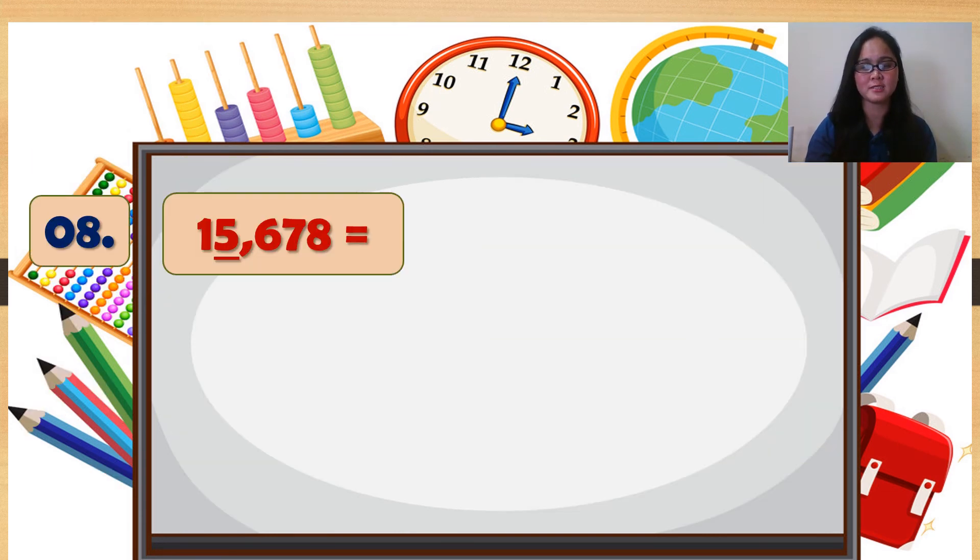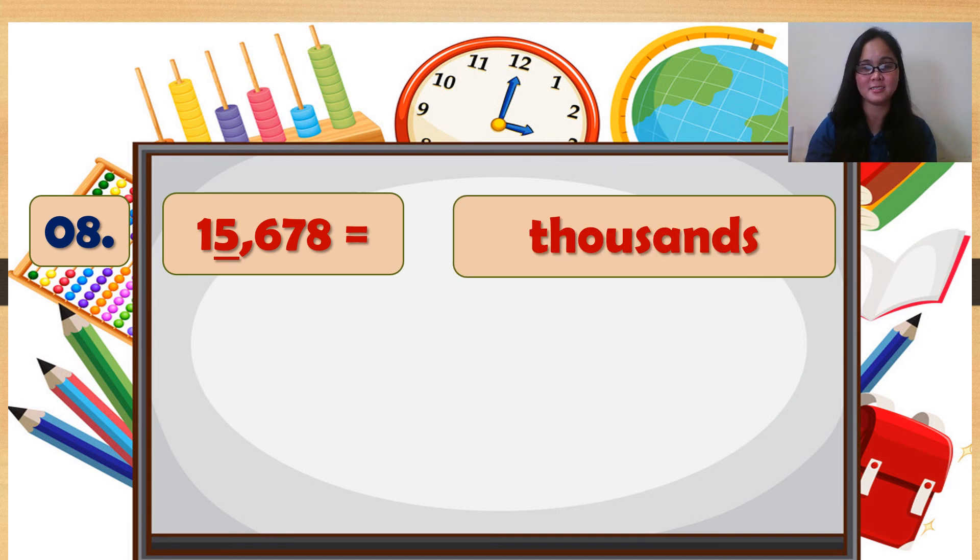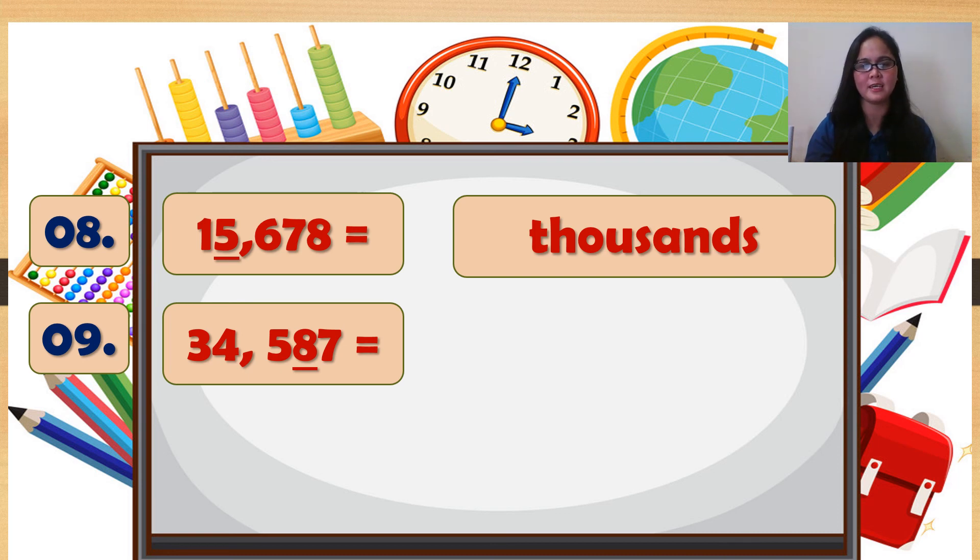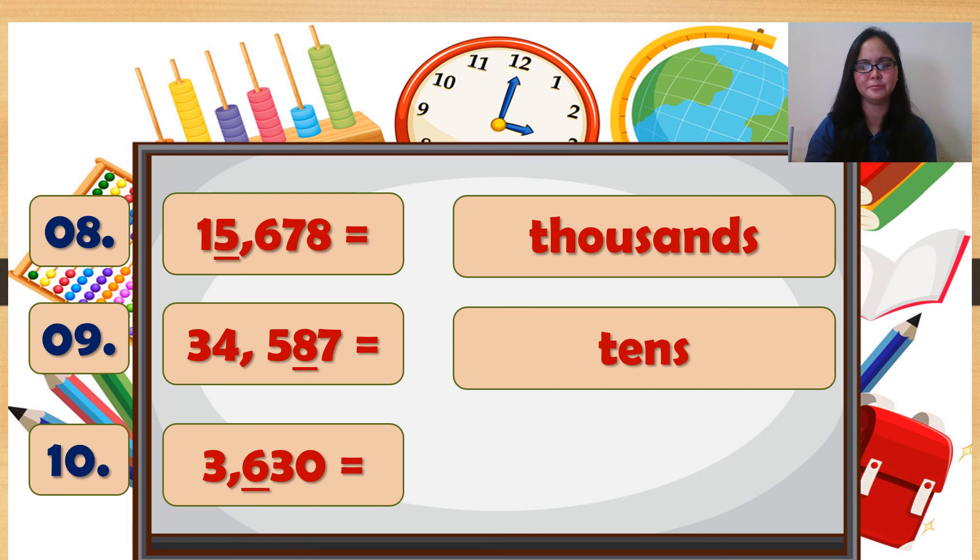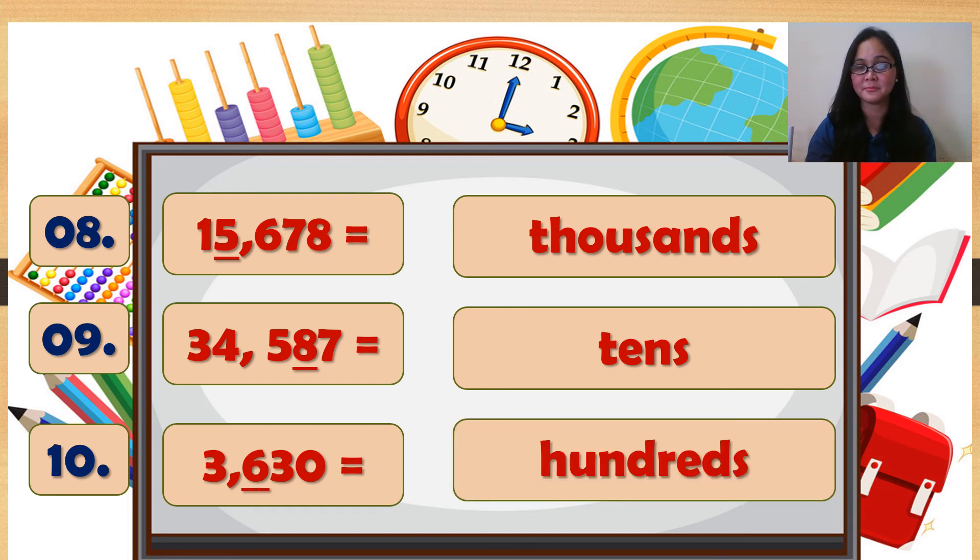Number 8: 15,678. 5 is ten thousands. Number 9: 34,587. 8 is tens. Number 10: 3,630. 6 is hundreds. Good job.